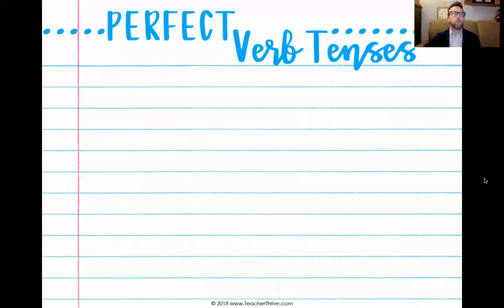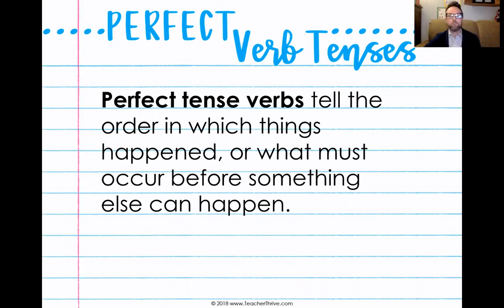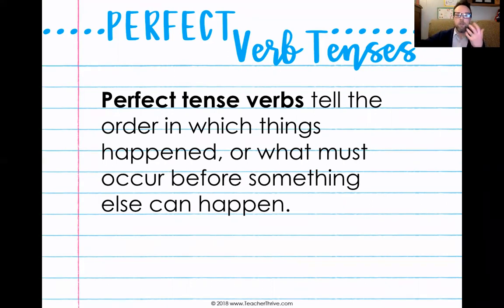Today we are going to be talking about perfect verb tenses. A perfect verb tense tells the order in which things happened or what must occur before something else can happen. This is really what we use when we're talking about sequence. We use it a lot in history because history happens in sequence — it happens in an order.